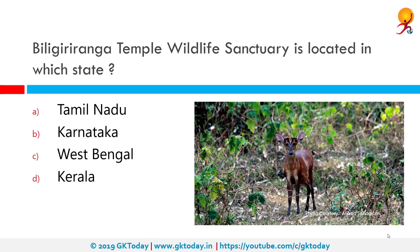The Biligirirangana Temple Wildlife Sanctuary is located in which state? The correct answer is Karnataka. It is situated on the Biligirirangana Hills, commonly called BR Hills, a hill range in southeastern Karnataka bordering Tamil Nadu. The area contains the Biligiriranganatha Temple and is also called BRT Wildlife Sanctuary.